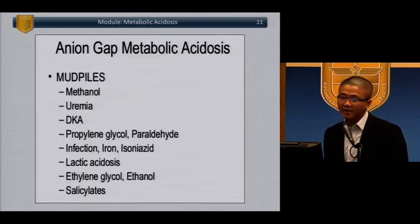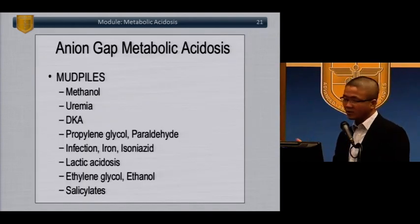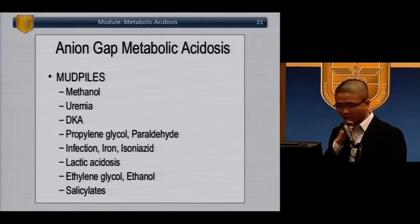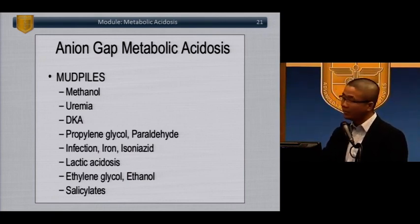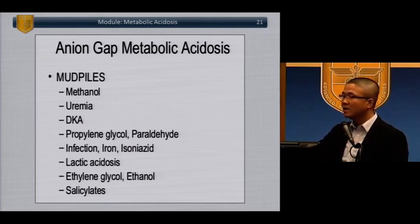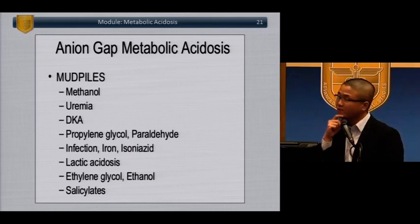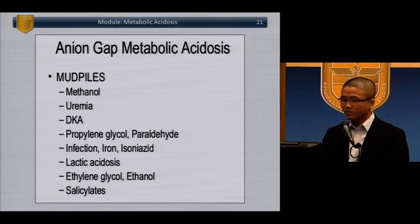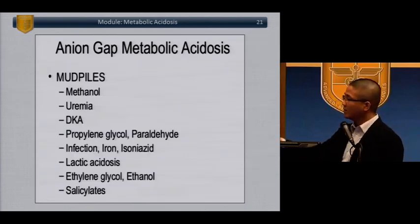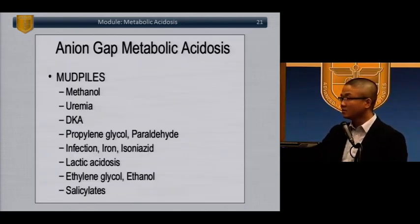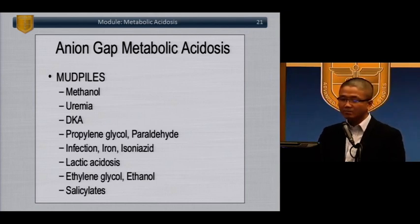Anion gap metabolic acidosis — the mnemonic is MUDPILES — lists the most common causes of an anion gap metabolic acidosis. Lactic acidosis is among them, even though it's only 80% sensitive as a reflection of metabolic acidosis. The patient population we most commonly see with an anion gap is a DKA — diabetic ketoacidosis — patient.